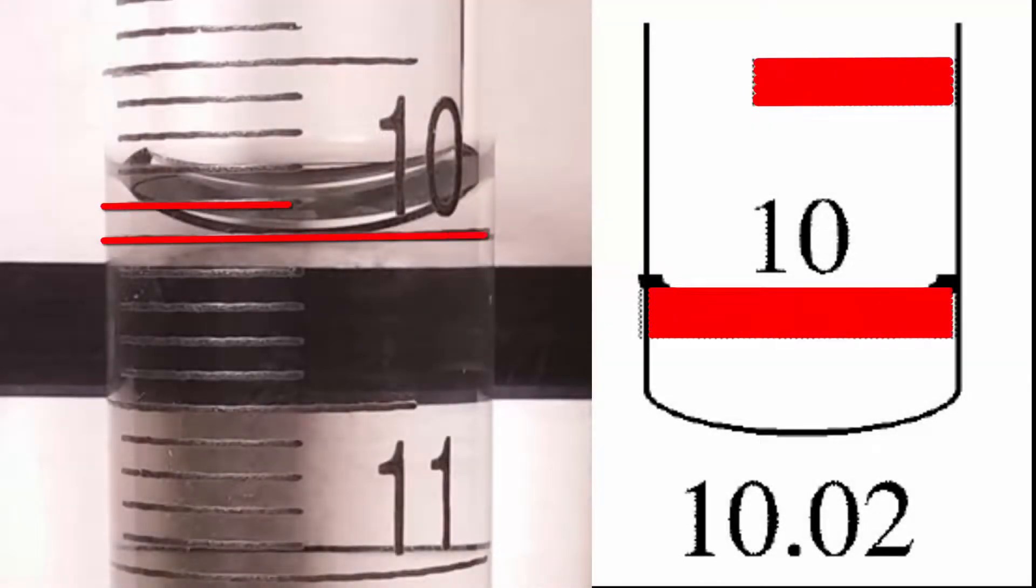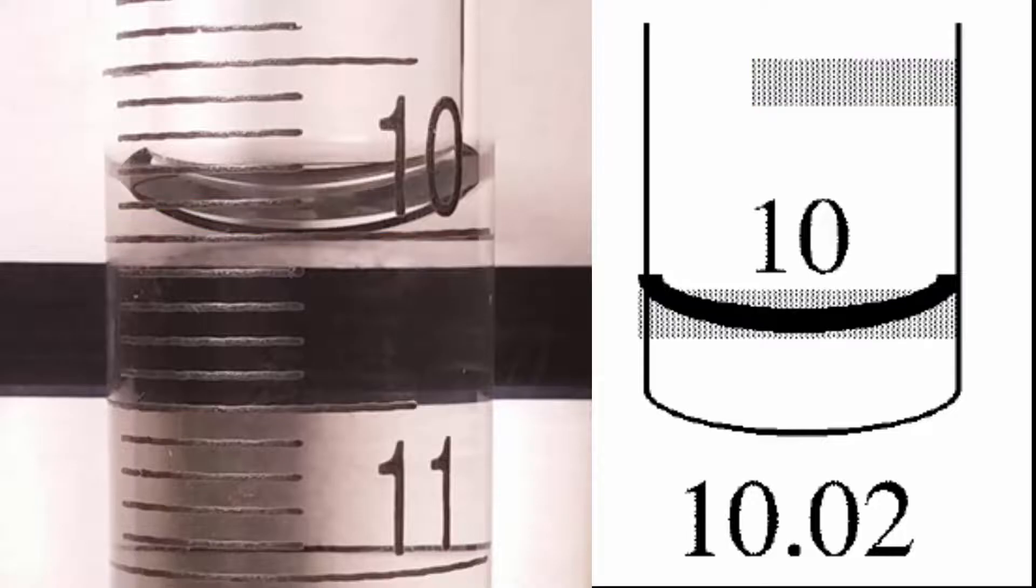To take accurate readings it is important to know that the thickness of each marking is approximately 0.02 milliliters. You should always use the top of the markings as the stated value.